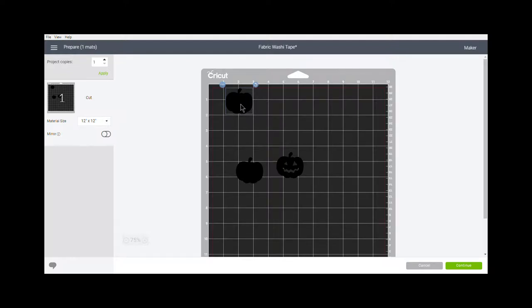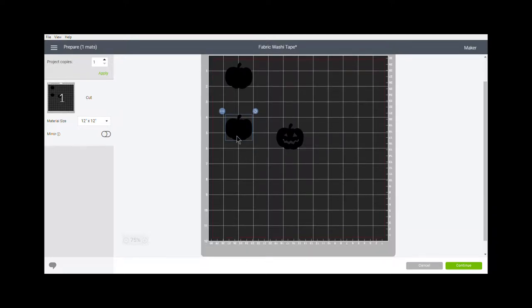So just kind of center that up and you can reference your mat and kind of look and see if maybe you want to drop it down just a little bit. My next seam is at three and a half. So I know that this pumpkin has to be below three and a half. So I'll just put him right in there somewhere. And let's give this one a try. We need to be below seven inches. So we'll put it right here.